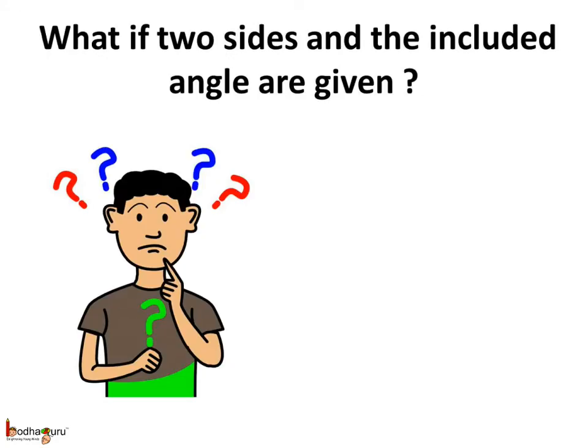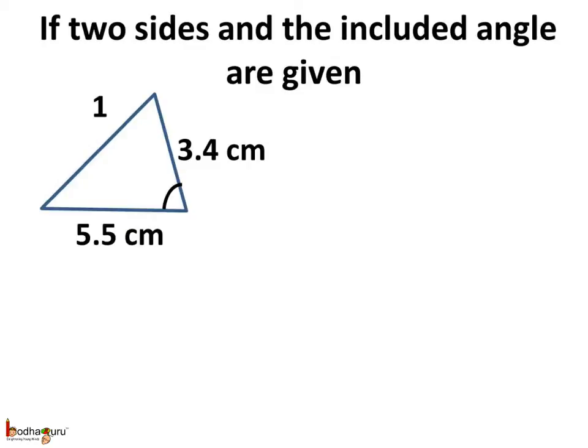You may wonder: what if two sides and the included angle are given? Let us see. You are given two sides and the measurement of the angle included between them — say 5.5 cm and 3.4 cm as the lengths of the two sides, and the included angle is 65 degrees.